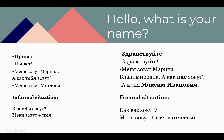Let's continue reading: Меня зовут — 'my name is.' М, Е, Н, Я — Меня. З, О, В, У, Т — Зовут. Together: Меня зовут — translates as 'my name is.' For example: Меня зовут Анастасия — My name is Anastasia. Please make your own sentence about your name.